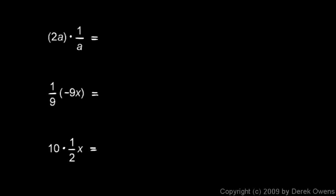Sometimes we can simplify mathematical expressions by finding reciprocals, remembering that a number and its reciprocal will always multiply to equal 1. For example, 2a times 1 over a: the a times 1 over a equals 1, so those cancel out, and I'm just left with 2. Because a times 1 over a gives 1, and 2 times 1 is 2.